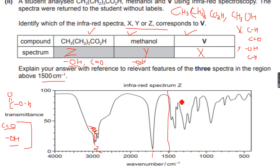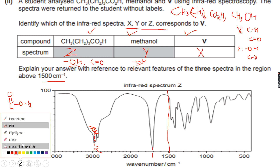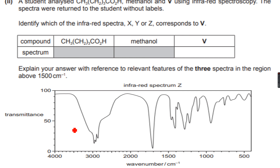The OH of alcohol specifically, so Y has to be assigned to methanol, so we are done with this question. I hope you understand why we have assigned spectrum X to compound V and not the other spectra.